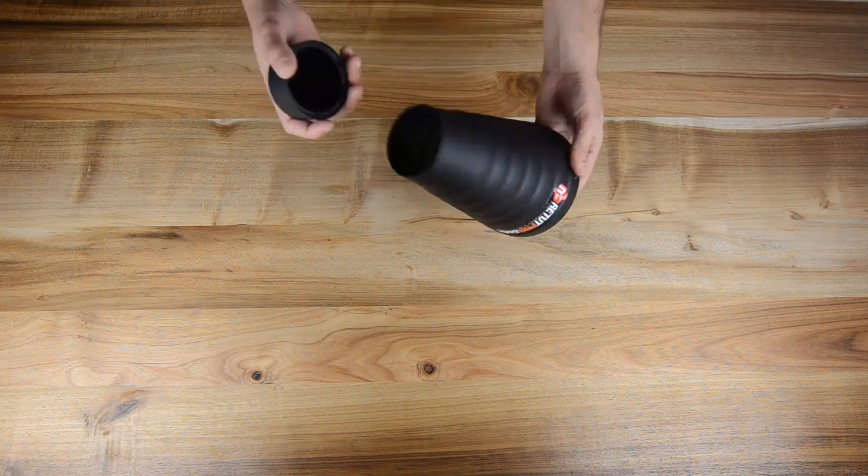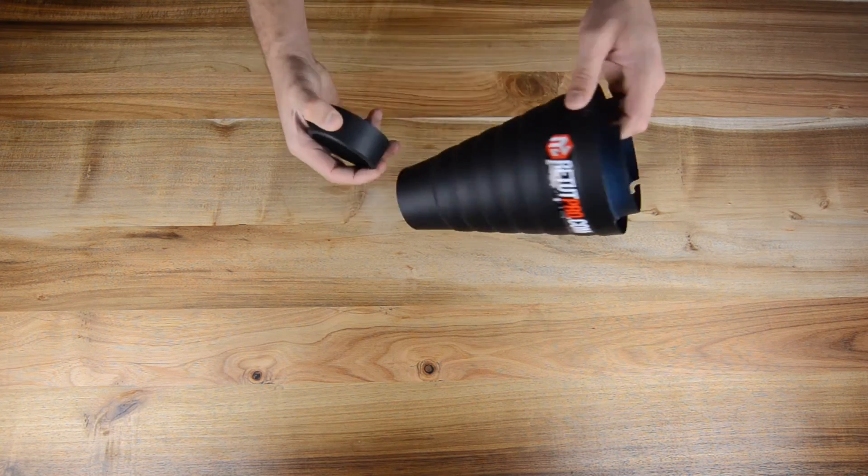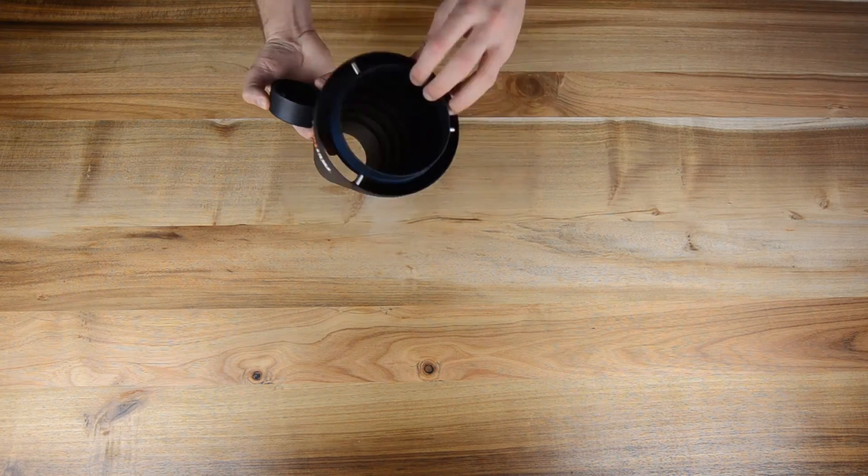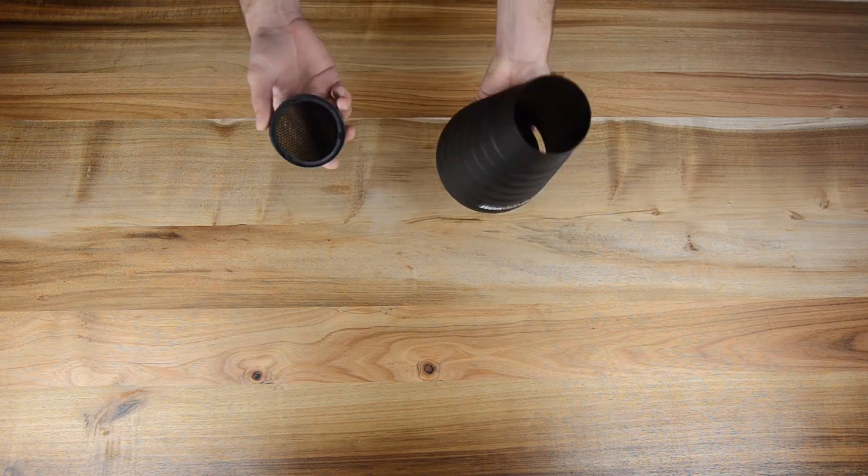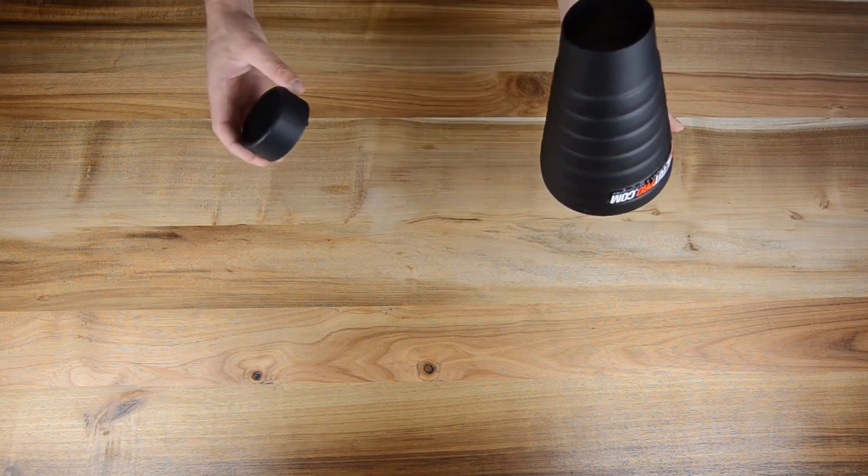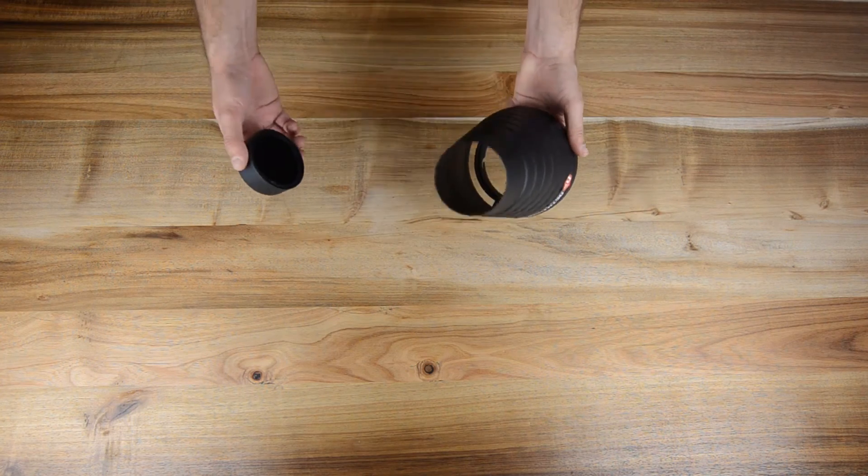Then light modifier number nine, a snoot with a little grid for the Elinchrom mounts which we use to shoot on backdrops and to narrow light on some certain spots. So this is also like a little extra.